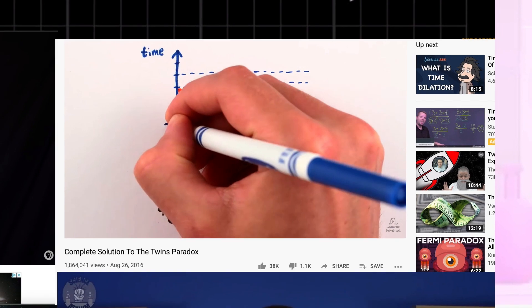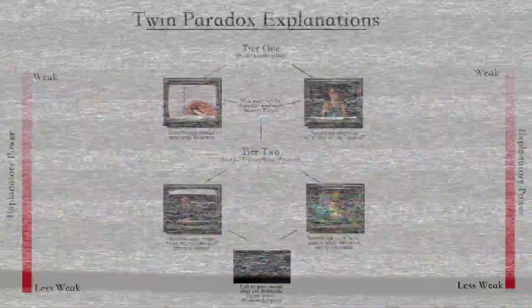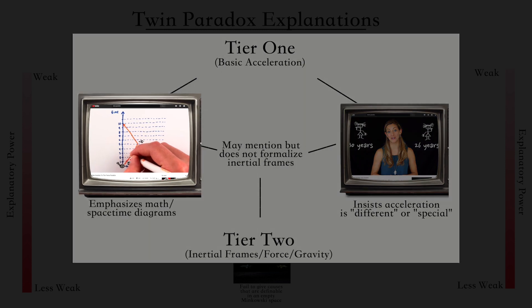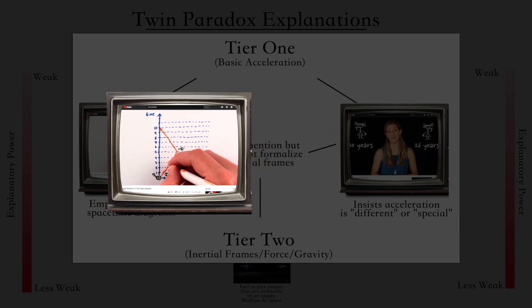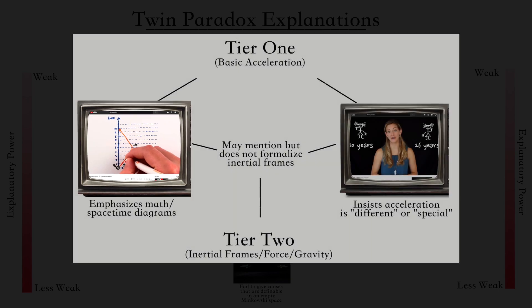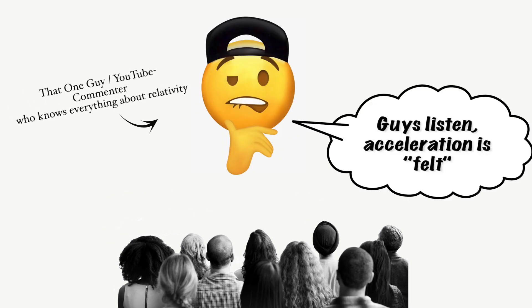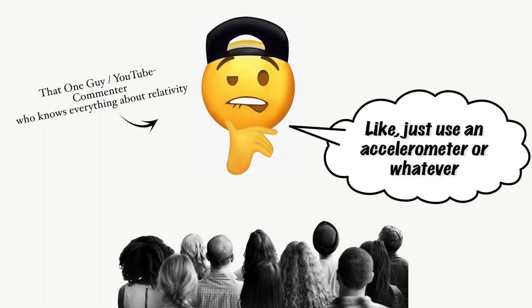After viewing a lot of twin paradox videos, we've realized that there are two tiers of explanations. The first tier gives the usual answer of acceleration and doesn't address the issue of its relative nature. These videos tend to try to make you think that the confusion will resolve itself if you just do the math or use a spacetime diagram, even though, as we'll show, this is not the case. Or if they're super lazy, they'll just tell you something like acceleration is different or privileged, or that you need general relativity, none of which are true.